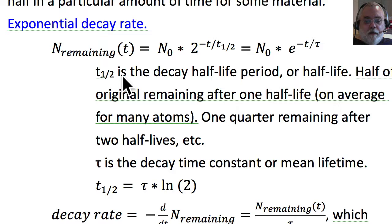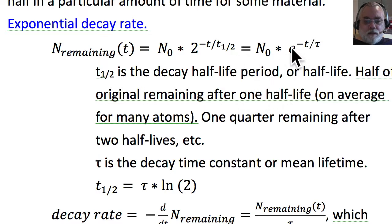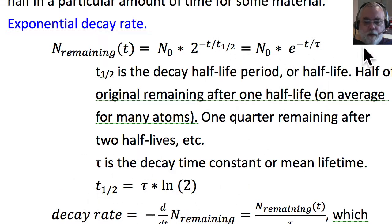After one half-life of a large sample of atoms, on average half of the atoms remain undecayed and half have decayed. After a second half-life, one quarter remain undecayed — half times a half — which means three quarters have decayed. This can equivalently be expressed as an exponential with a decay time constant tau. Tau is related to t½ by a formula we're not going to be too worried about.